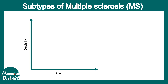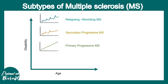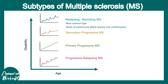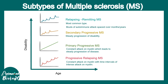MS is classified into four types: relapsing-remitting (RRMS), secondary-progressive, primary-progressive, and progressive-relapsing. RRMS is the most common, with bouts of autoimmune attack occurring over months or years. Secondary-progressive involves steady progression of disability. Primary-progressive involves constant attack on the myelin sheath leading to steady disease progression — the most dangerous form. Progressive-relapsing involves constant attack that sometimes intensifies. The last two types represent more severe forms of MS.